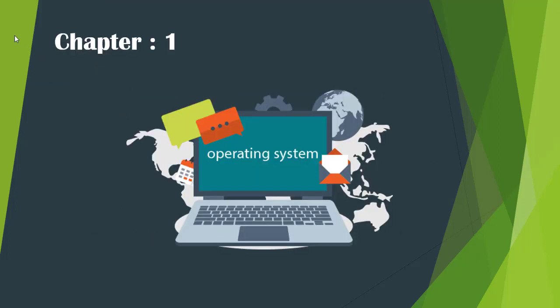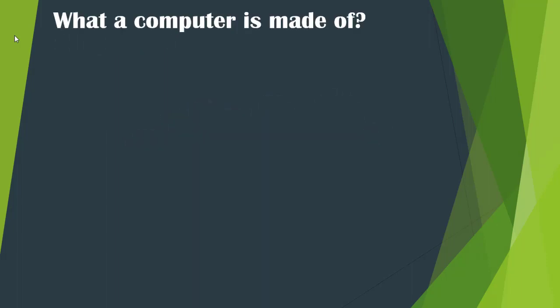An Operating System is a very important part of a computer. Operating System controls the overall activities of a computer. A computer is useless without the operating system. Before we talk about the operating system, let us understand what a computer is made up of. A computer is made of hardware and software. As you have learned different parts of a computer in class 2, and you have used different software like MS Paint and MS Word, so a computer is a combination of hardware and software.